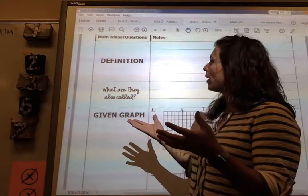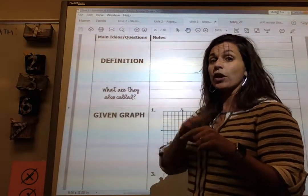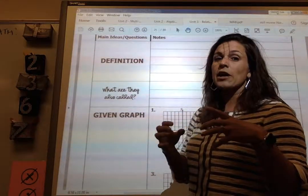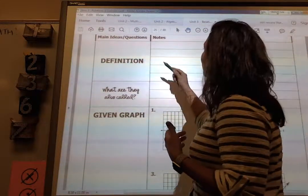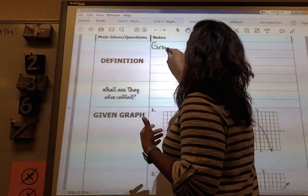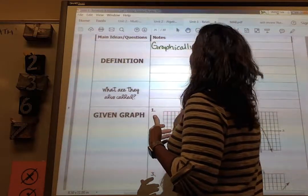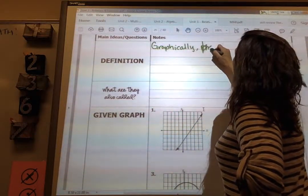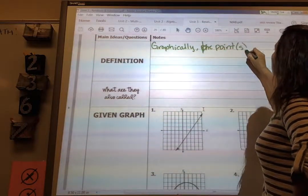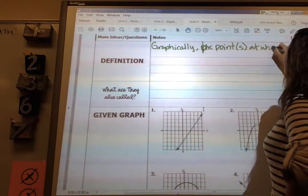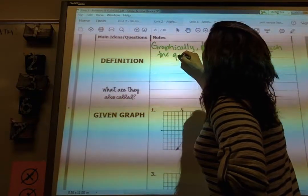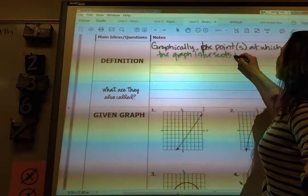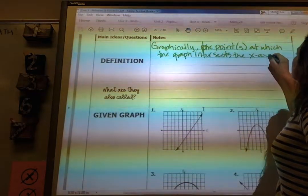So what is the definition? Well, we're going to look at it in two ways. We're going to look at it graphically. What does it look like on a graph? And then we're going to look at it algebraically. Algebraically is how we do it by hand. So graphically, a zero of function is the point or points at which the graph intersects the x-axis.